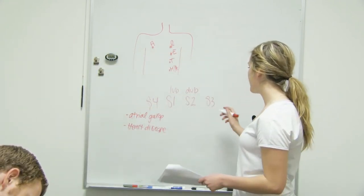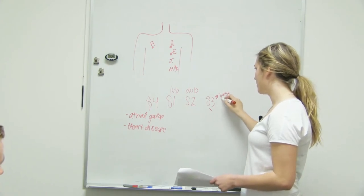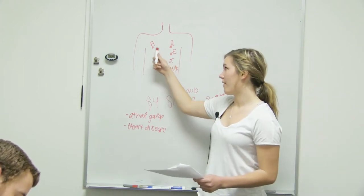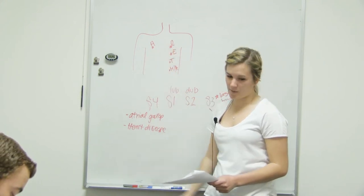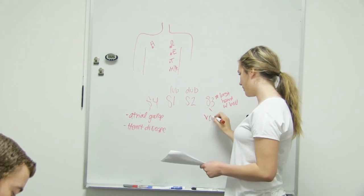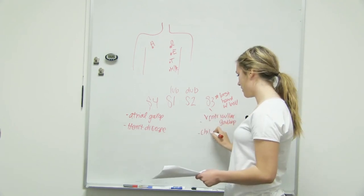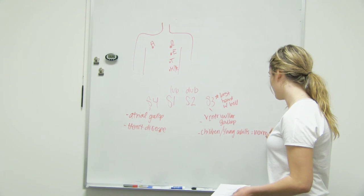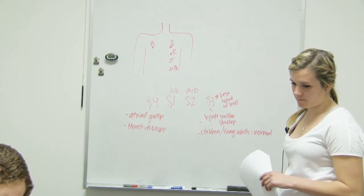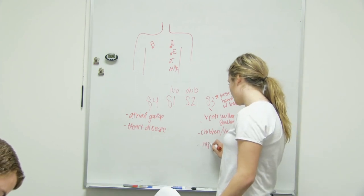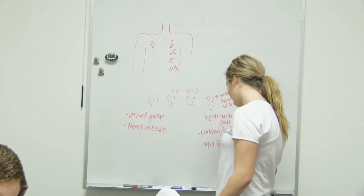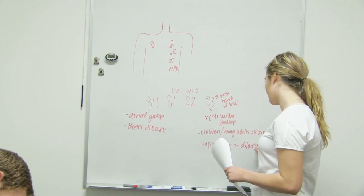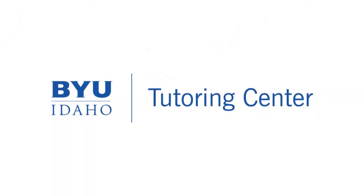Okay. So, then you have S3, which is best heard with bell on your stethoscope. Like the bell side, the smaller side. After we listen to it with the bigger side, listen to it with the bell. So this one is similar, but it's a ventricular gallop, and if it's heard in children and young adults, it's okay, it's normal. What the sound is basically is just a rapid filling of the ventricle, of the dilated ventricle.